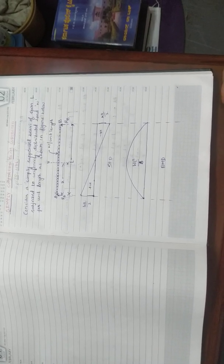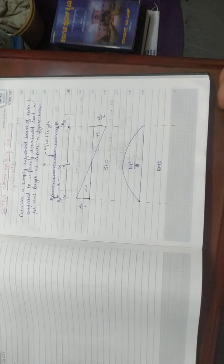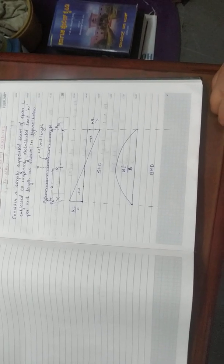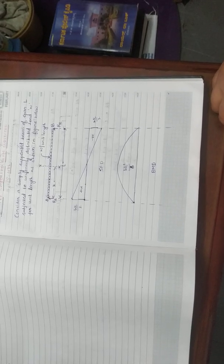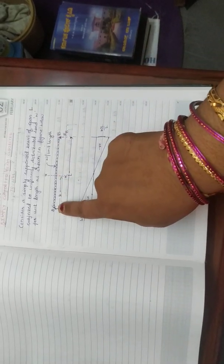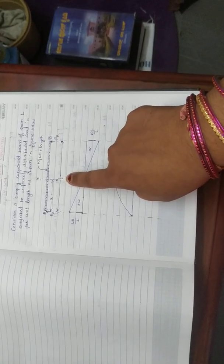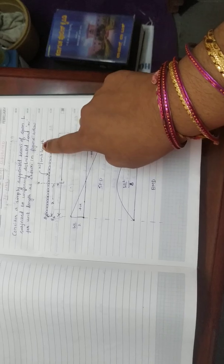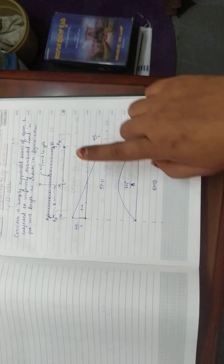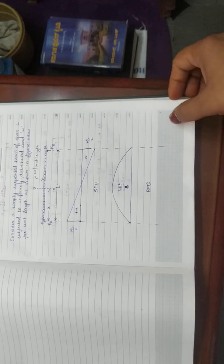Let us consider a simply supported beam subjected to UDL, i.e. Uniformly Distributed Load W for a length of L. I have shown the simply supported beam AB of a span of L subjected to Uniformly Distributed Load W per unit length. This is the Shear Force Diagram and Bending Moment Diagram which we will draw at the end.